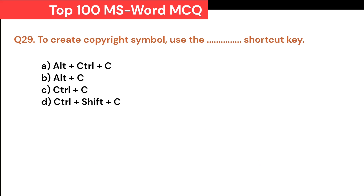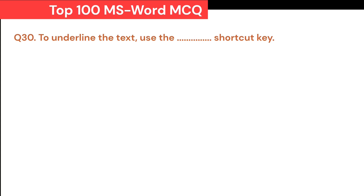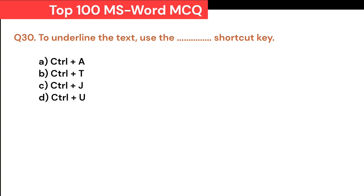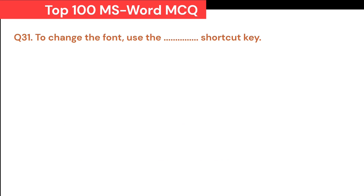A. Alt+Ctrl+C. B. Alt+C. C. Ctrl+C. D. Ctrl+Shift+C. Correct answer is A. Alt+Ctrl+C. To underline the text, use the Dash shortcut key: A. Ctrl+A. B. Ctrl+D. C. Ctrl+J. D. Ctrl+U. Correct answer is D. Ctrl+U. To change the font, use the Dash shortcut key: